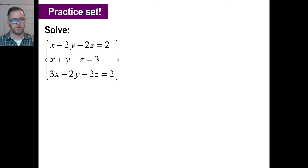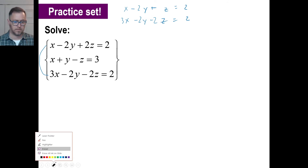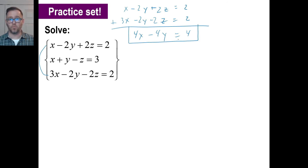If we do the top and bottom equations, we get x minus 2y plus 2z equals 6, and 3x minus 2y minus 2z equals 2. Adding straight down: x plus 3x is 4x, negative 2y plus negative 2y is negative 4y, the z's cancel, and 6 plus 2 is... wait, let me redo that. We get 4x minus 4y equals 4. There's one nice equation. We just need one more equation with x and y in it.